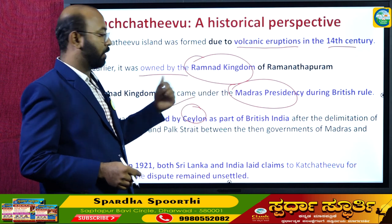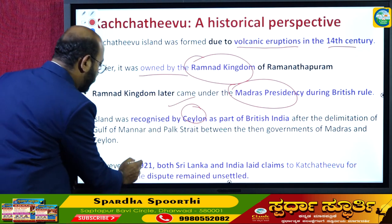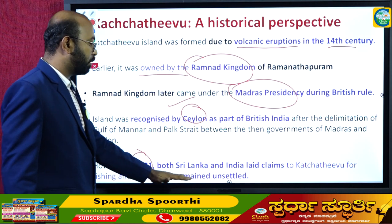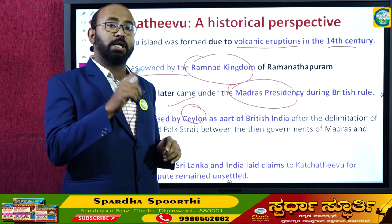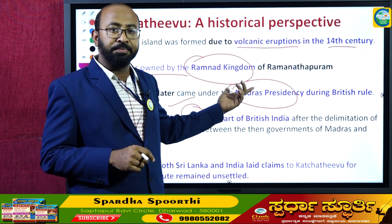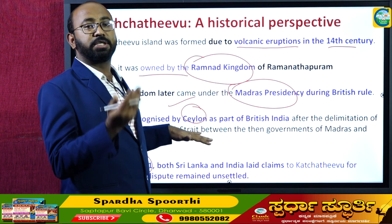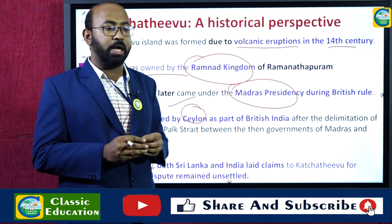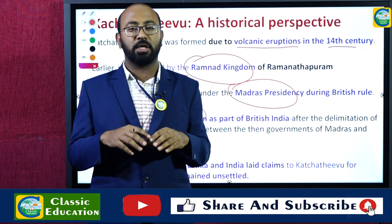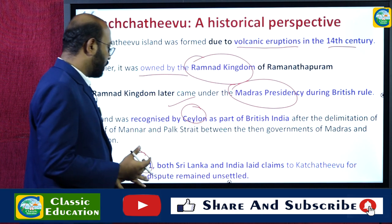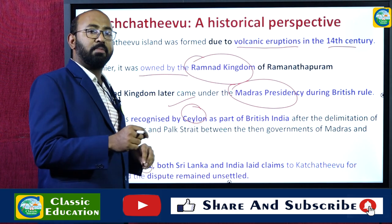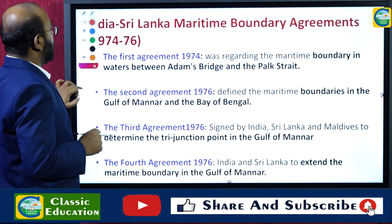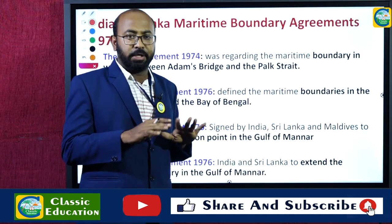However, in 1921, both Sri Lanka and India laid claims to Kachitivu for fishing rights, and the dispute remained unsettled. Though Ceylon had earlier said the island belonged to the British government in India, in 1921 it changed its stance and started claiming fishing rights over the island. From 1921 onwards, this dispute began to arise and has remained an unsettled dispute to this day.